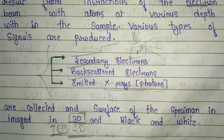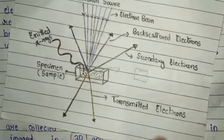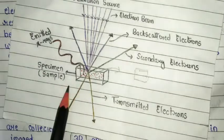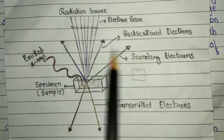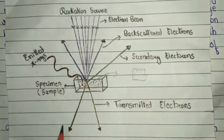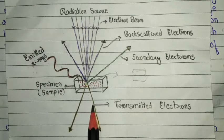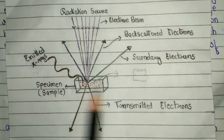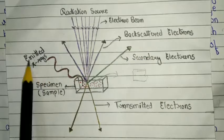From the diagram we understand the principle well: this is our specimen or sample. When the radiation source — the electron beam — is bombarded onto the specimen, three types of signals are produced: secondary electrons, backscattered electrons, and emitted X-rays, and also transmitted electrons. In the next video on transmission electron microscope we will study transmitted electrons. The three main signals are secondary electrons, backscattered electrons, and emitted X-rays.